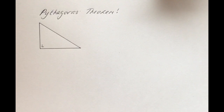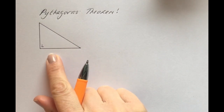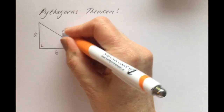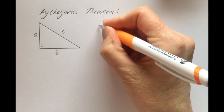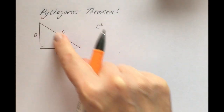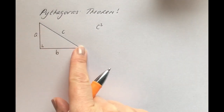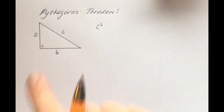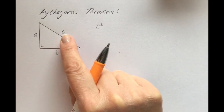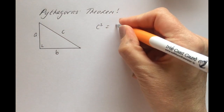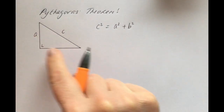In this video we're going to revise Pythagoras' Theorem. Pythagoras' Theorem is all about right-angled triangles and in particular the sides of the right-angled triangle. Pythagoras' Theorem says that the longest side, what's called the hypotenuse, that's always the longest side of a right-angled triangle, the diagonal side, always the one that is opposite the 90-degree angle.